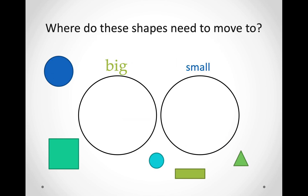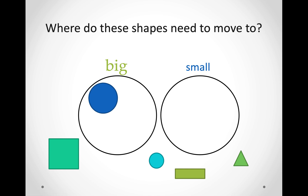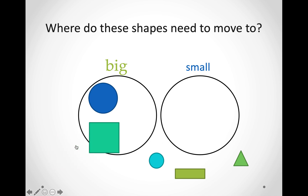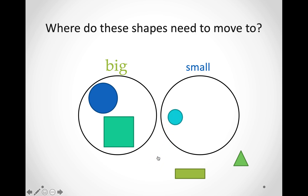Let us try another one. In this diagram, we are going to sort out the shapes into big and small. Let us look at this circle over here. Is it a big circle or is it a small circle? If you have guessed that it is big, well done — you are doing awesome. Let us look at this square over here. Is it big or is it small? It is a big square. Excellent. So, we will put it in the circle that says big. How about this circle over here? Is it big or is it small? It is really, really tiny. So, let us put it in the small circle.